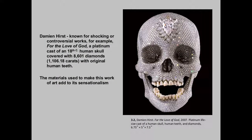Damien Hirst is another really interesting artist who started out in the late 20th century. This is an actual human skull — a real skull — and it's got human teeth. He took diamonds, and this is worth a lot of money because it has 8,601 actual real diamonds, including this very large one here. Hirst's work is edgy and complicated, and we wouldn't normally see this in an art form.